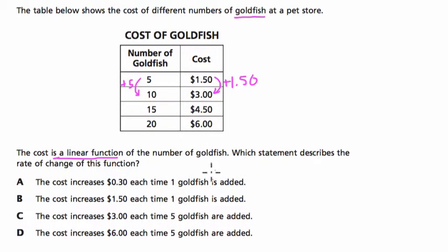Which statement describes the rate of change of this function? So they're asking you for the slope here, and they're asking you essentially, what is either the cost of a goldfish or the cost of a group of goldfish?